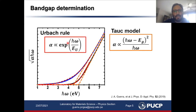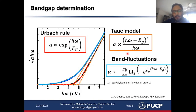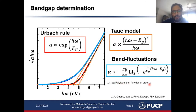These Urbach tails can be modeled by the so-called Urbach rule. We have developed a model based on band fluctuations, which can actually model the whole fundamental absorption — that is, the Tauc region as well as the Urbach region — in a single equation. From this equation, we can find key parameters like the Urbach energy as well as the optical bandgap. This function is called the polylogarithm function of order 2 and is a representation of a Fermi integral. If you are interested in knowing more about this model, please visit the paper we published a couple of years ago.